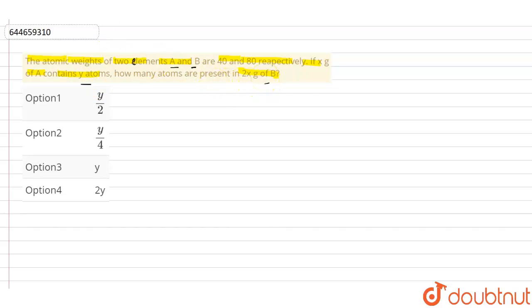So let's see this. The atomic weight of A is 40, so we can find out the number of moles for A. That is given weight, which is x, upon the atomic weight, which is 40, so x by 40.